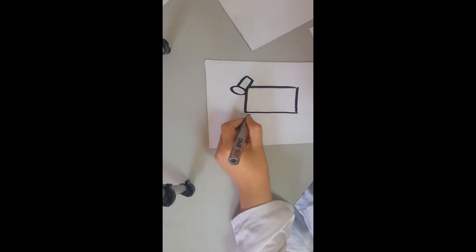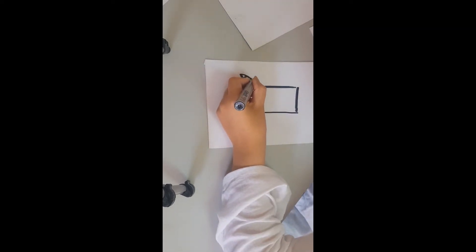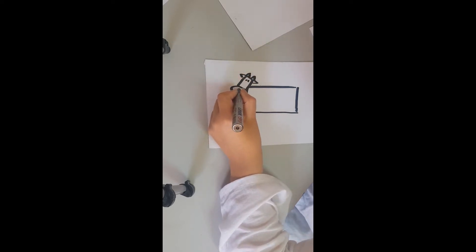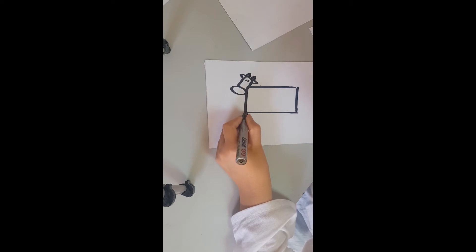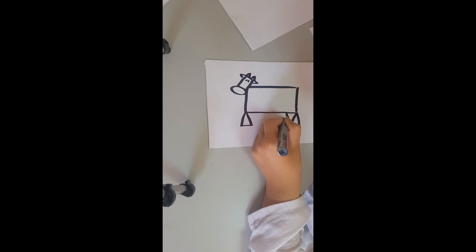Here is an oval. Could you guess what I'm drawing? Now drawing the legs. It has four legs.